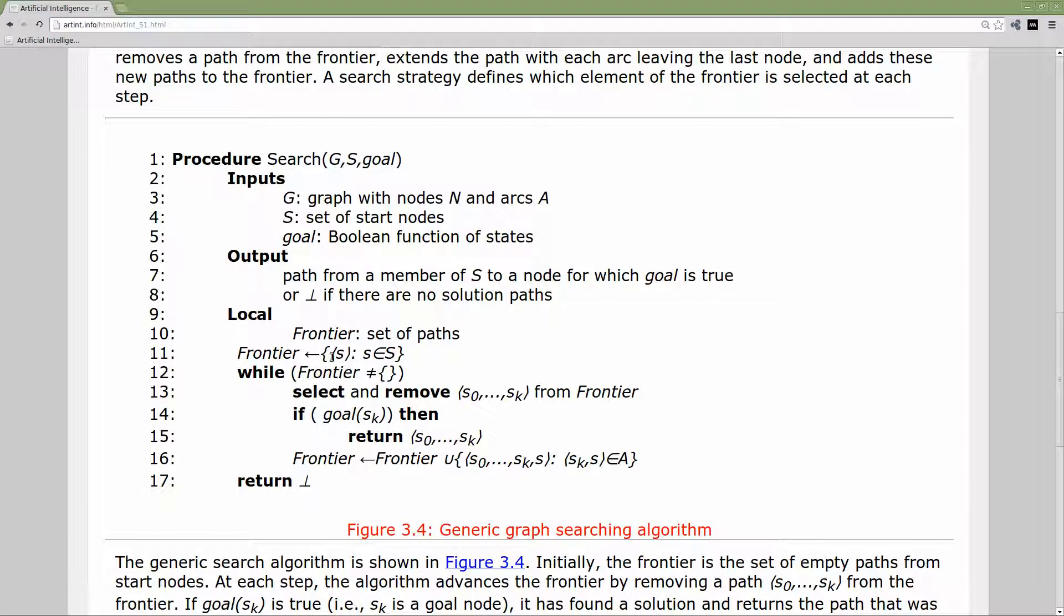These are tuples. This set is where we're keeping the paths, the possible paths to the solution. It's a set of these little tuples that represent paths through the graph. s0 would be the first state up to the last state. So we're maintaining a set of partial paths, essentially. That's how we're keeping track of things during the search.